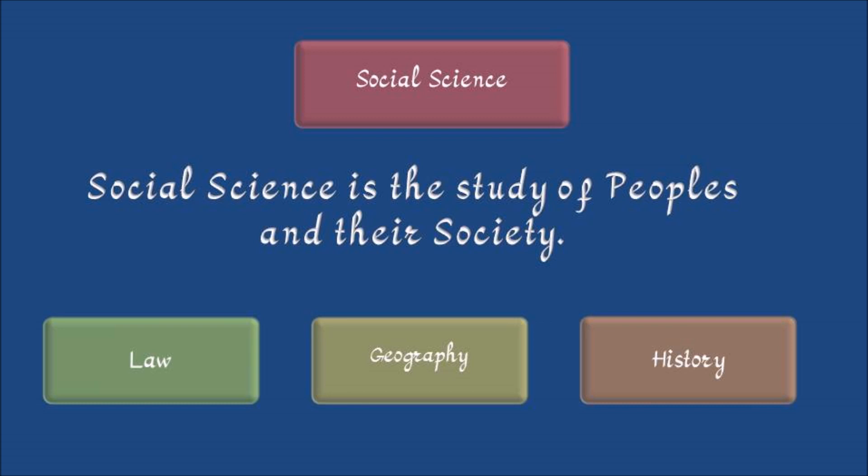Social science is the study of society and people, such as history, geography, and law, which are part of social sciences.